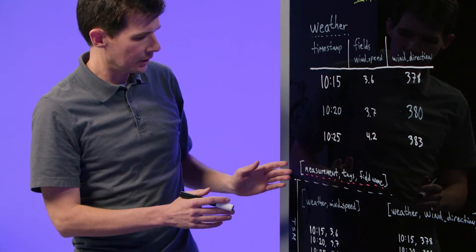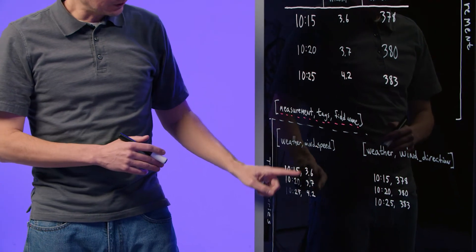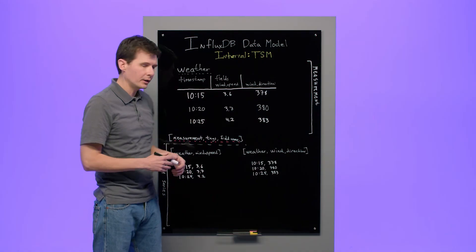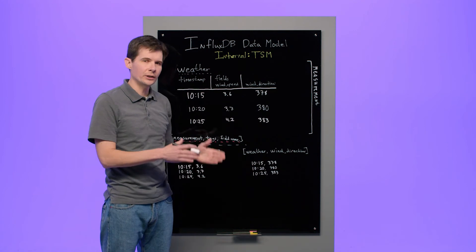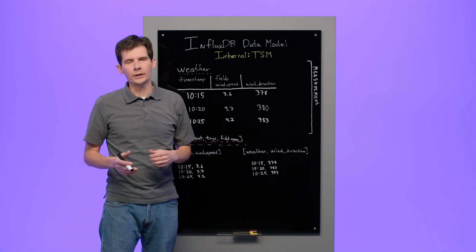This data is represented by two TSM series. A series is a single value varying over time. And TSM stores series as columns on disk.